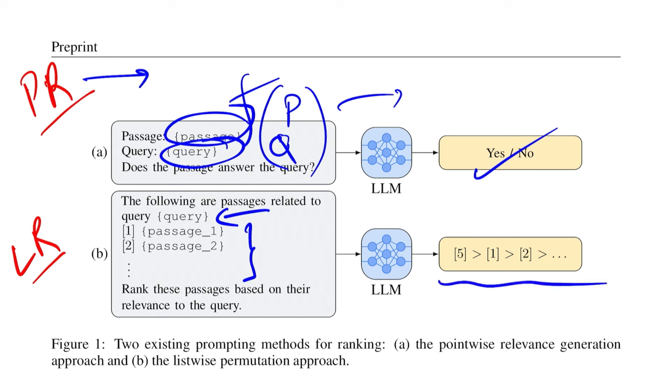In this we expect to get something like this wherein the fifth index is more relevant compared to the passage that's on the first index for a given query Q. These are some basic methods or prompt structures that you can use if you're using LLMs for the re-ranking step. Obviously, these methods come with a lot of disadvantages.